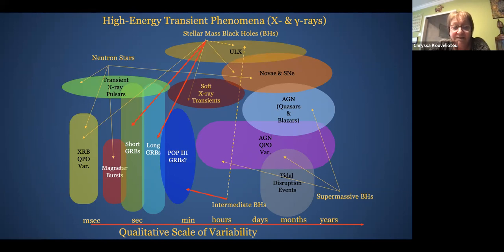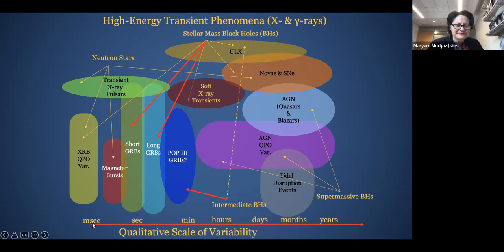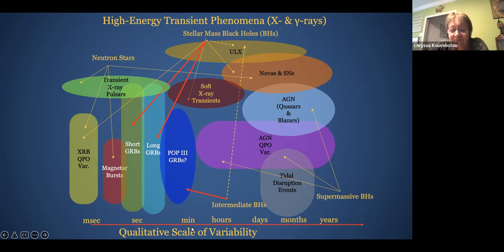So magnetars are high-energy, and they are transient phenomena, and we discovered those in X-rays and gamma-rays. Since they are transient phenomena, I thought it might work better if I could show you a qualitative scale of transient phenomena, and where magnetars actually fall into this.